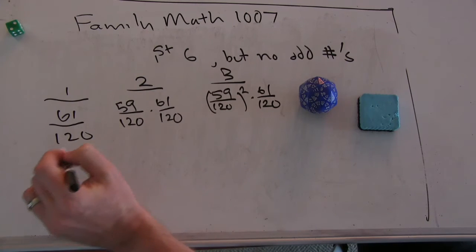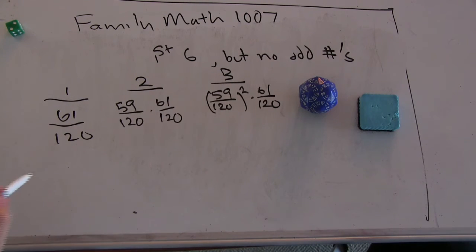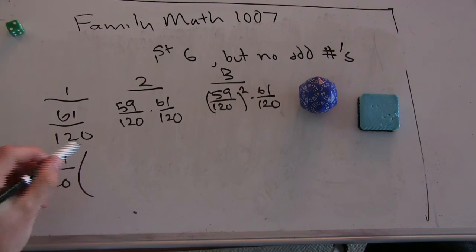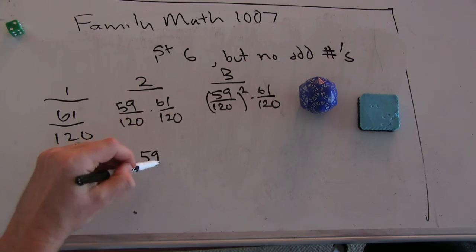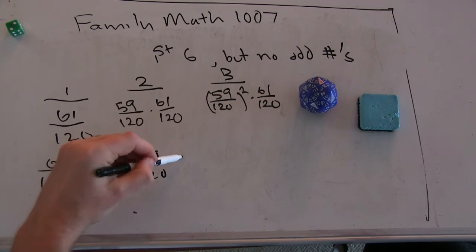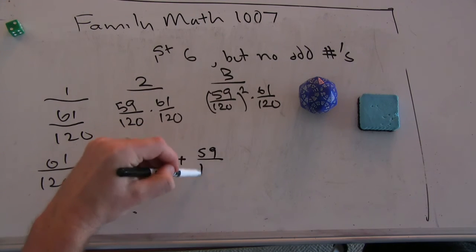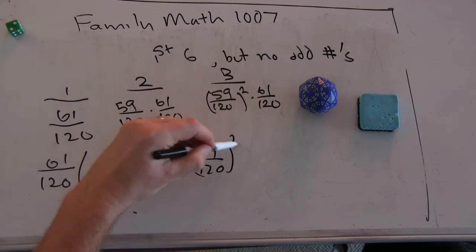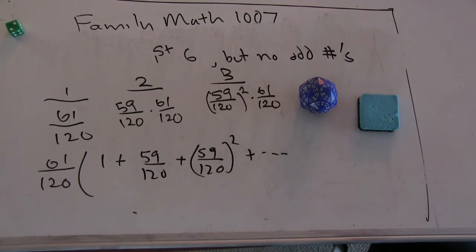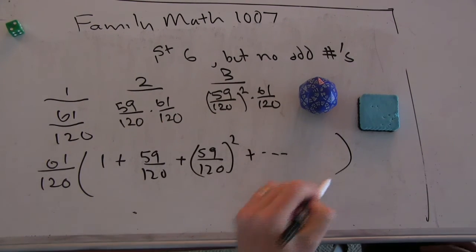So I get a new series, which is 61 over 120 times 1 plus 59 over 120, plus 59 over 120 squared, plus dot dot dot.